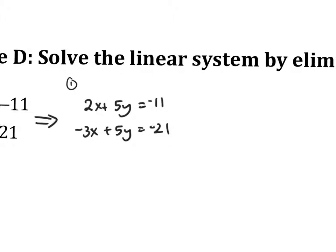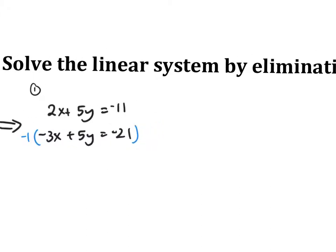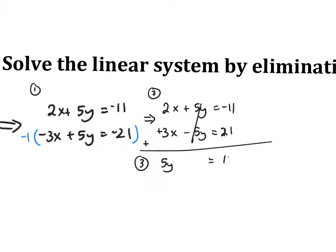Now step two is I need to multiply something by something. So notice I can actually just take the bottom and multiply by negative 1. Why? Because then the y's drop out. So I get 2x plus 5y equals negative 11. Positive 3x minus 5y equals positive 21. So step two. Step three, I add them together. The y's in this case drop out. 5x equals positive 10. And my fourth step here is divide both sides by 5 to get a 2.